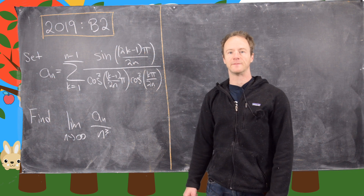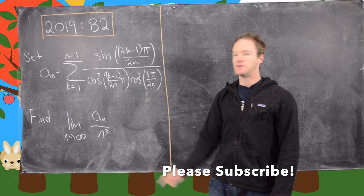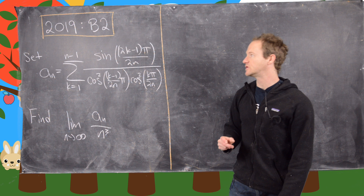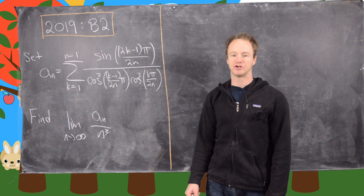In this video we're going to look at a solution to question number B2 from the 2019 Putnam. The question reads as follows: we let An be the sum as k goes from 1 to n of 1 over sine of (2k−1)π/2n times cosine squared of (k−1)π/2n times cosine squared of kπ/2n.